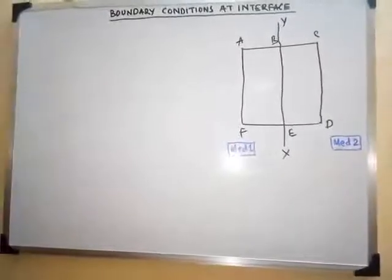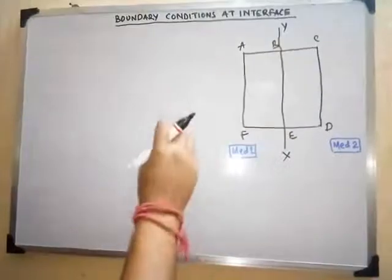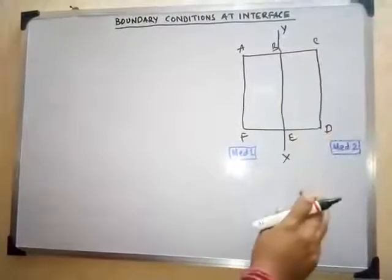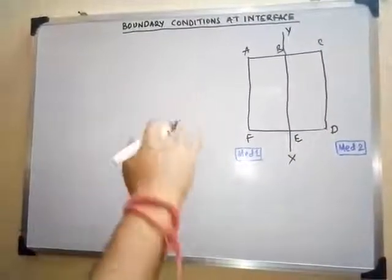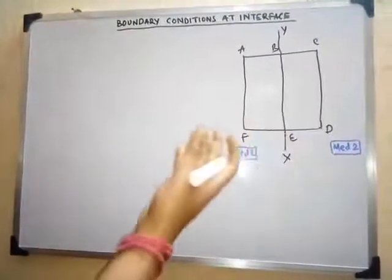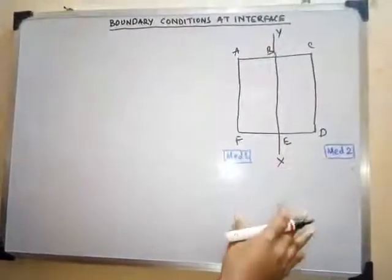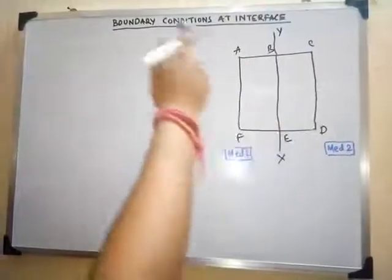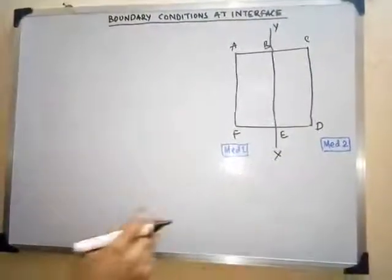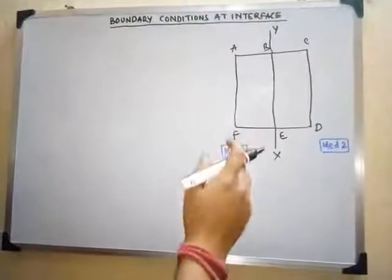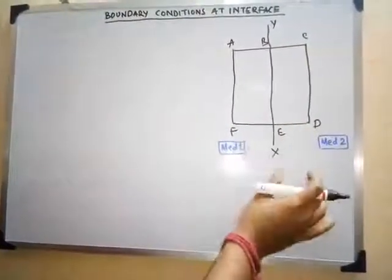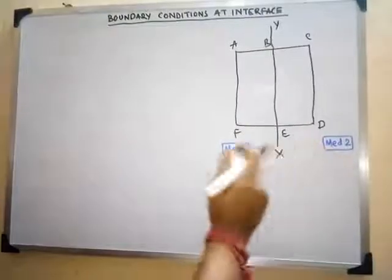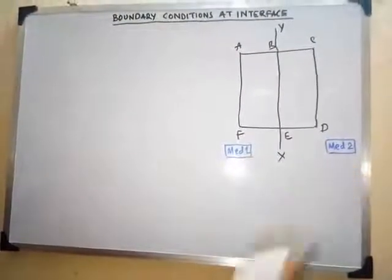In this class we will discuss the boundary conditions at interfaces. Interfaces means suppose there are two mediums — one medium on this side and another medium on this side. We will see what will be the conditions or properties of the electric and magnetic field if there are two different mediums present, and what will be the condition of the electric and magnetic field at the interface between medium 1 and medium 2.